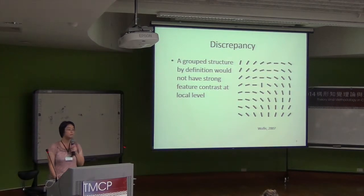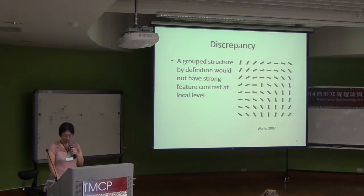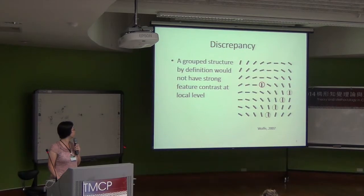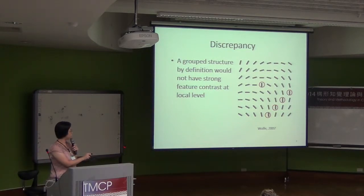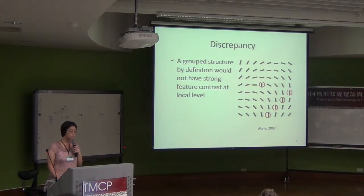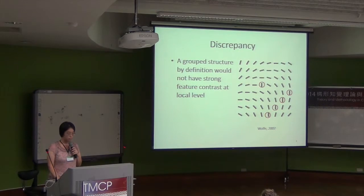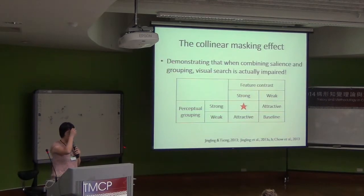Taking a look at the example from Jeremy Wolf: if you want to find something vertical, you will see this vertical bar immediately. However, I will tell you there are four other vertical bars — they are all hidden. You might not see them because they are well grouped in the local structure. So when something is grouped, it loses its feature contrast.